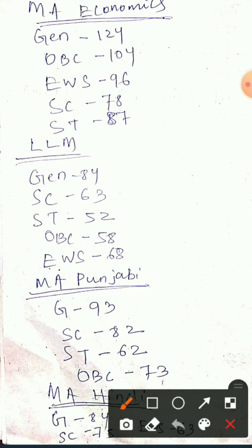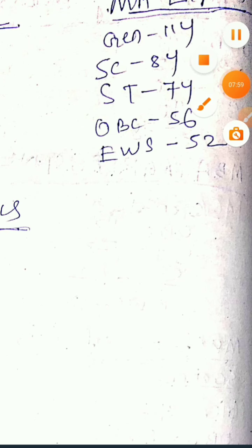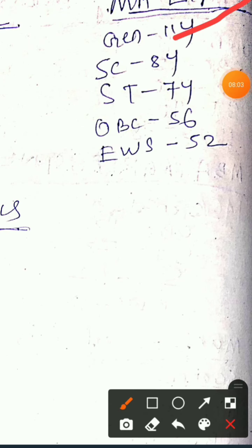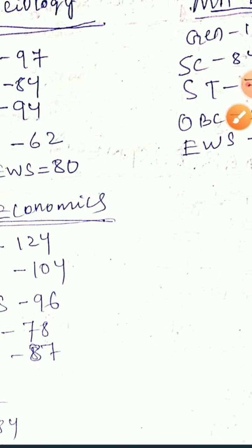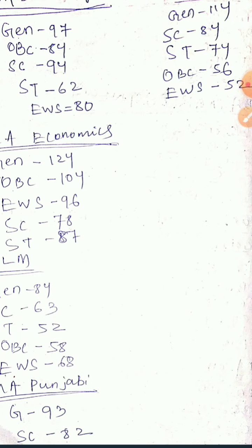For MSc Life Science — the general cutoff is 212, SC is 167, ST is 146, OBC is 182, EWS is 112. As you see here, the EWS cutoff is generally nearly equal to the general cutoff, though sometimes it falls down.